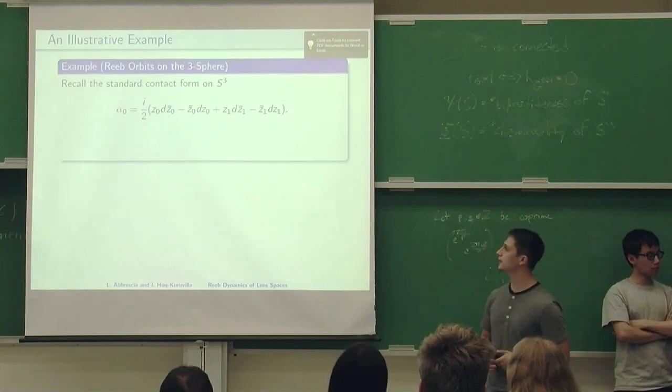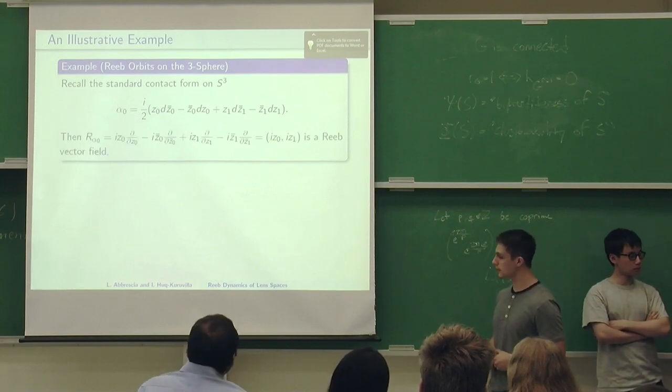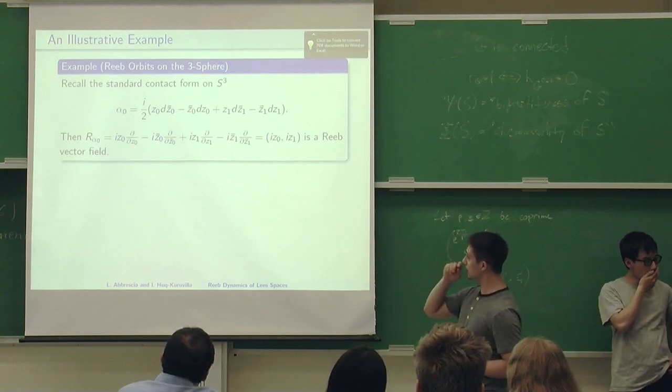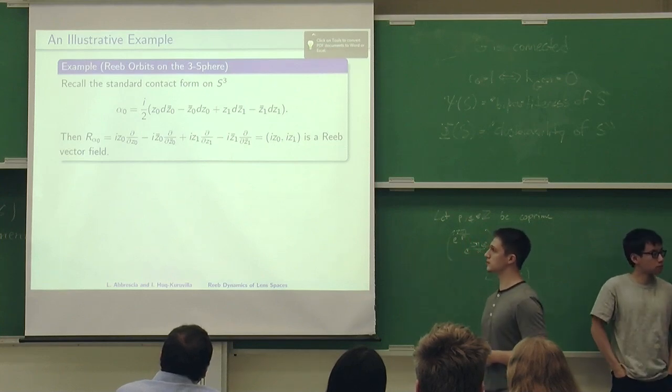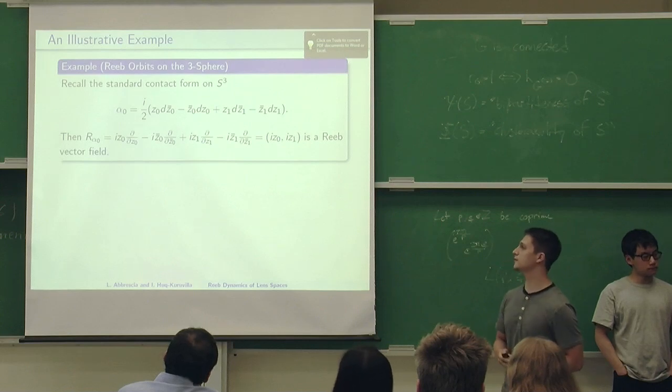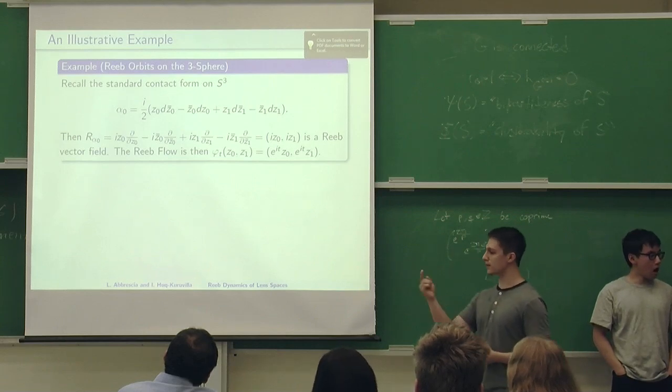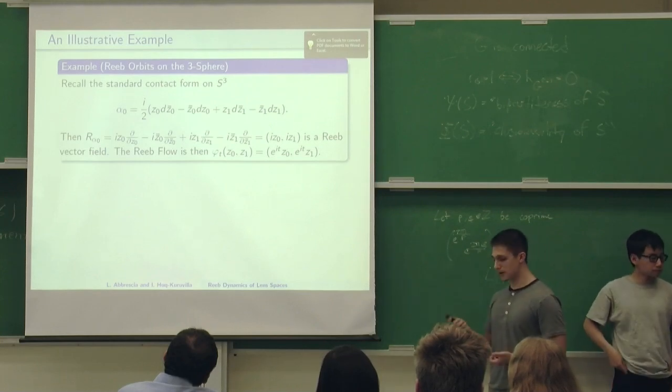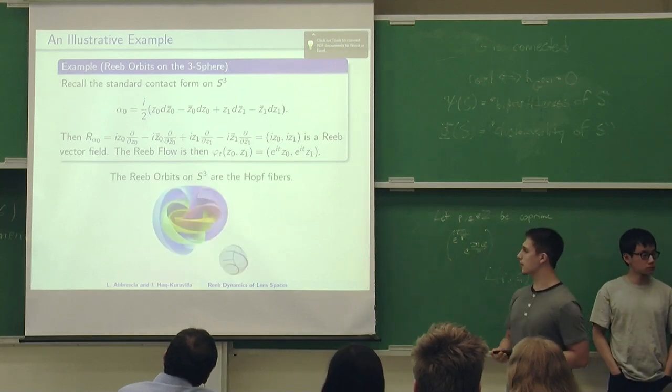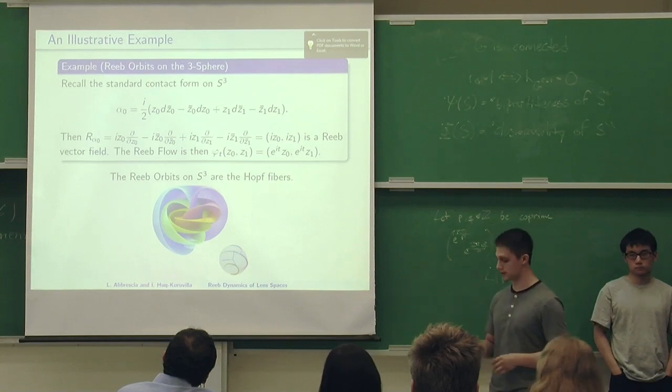Let's give an example. This is the alpha zero that I defined earlier. The Reeb vector field is given by this. In case you don't believe me, you can see that when alpha zero eats this form, we're going to have the sum of the norms of Z zero and Z one, which on S3 is one. So alpha of R equals one. We can solve the differential equation that gives us flow. Here it is. These are orbits because at every point you can come back to the same point. These might look familiar because the Reeb orbits on S3 are the Hopf fibers, which are a topological object studied in detail. But we will not mention it in the rest of the talk.